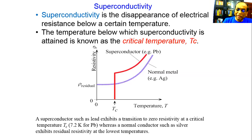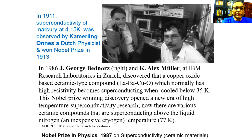The temperature Tc is called the critical temperature. In 1911, the superconductivity of mercury was observed by Kamerlingh Onnes. The superconductivity of mercury is at 4.15 degrees Kelvin. Kamerlingh Onnes received the Nobel Prize in 1913. This is the field of physics where the Nobel Prize was given three times — this was the first Nobel Prize in 1913.